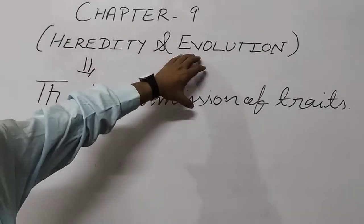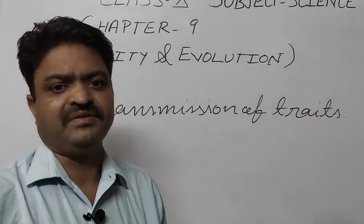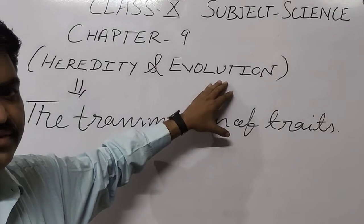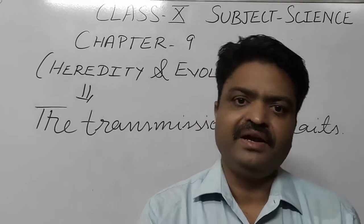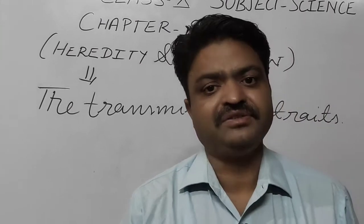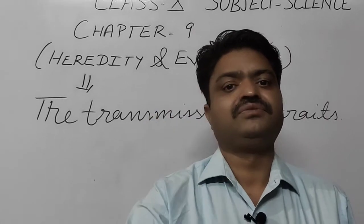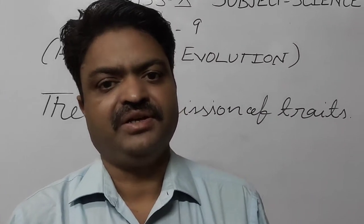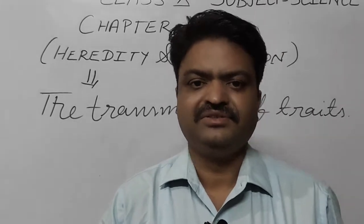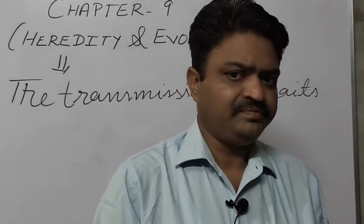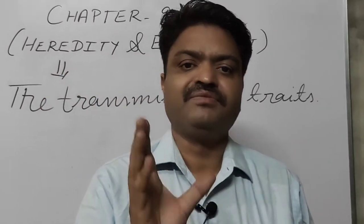The gradual developments in a living organism generation after generation are known as evolution. The branch of science that deals with heredity and evolution — in which we study about the transmission of traits from one generation to the next and the gradual developments in new living organisms — is known as genetics.